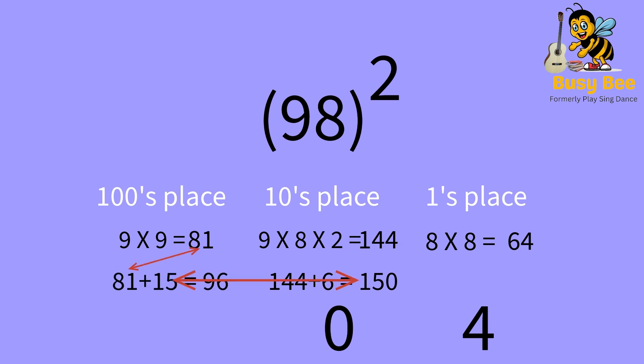The next step is to take 81 plus 15, which is 96. We take the 6 as the hundreds place answer, and the 9 as the thousands place answer.